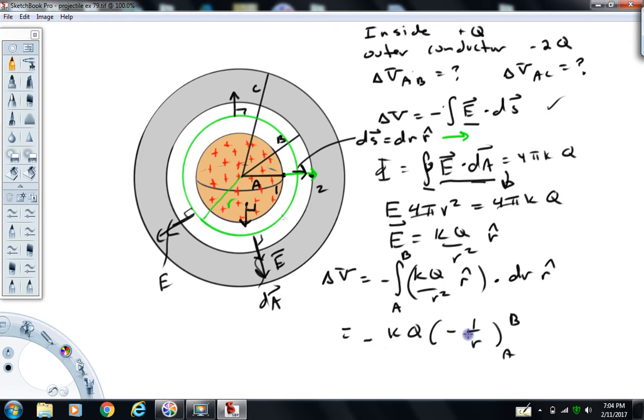You'll notice that these basically cancel. So we get kq times the quantity 1 over b minus 1 over a. So there's our expression for the potential difference between 1 and 2, or from a radius of a to a radius of b.